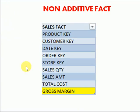Non-additive fact means if you have gross profit, margins, or percentages — those ratios are related to non-additive facts. They are not related to any of the dimensions, but they are available in your fact table. You can use them in reporting, but they are not related to any dimension. Those are non-additive facts.